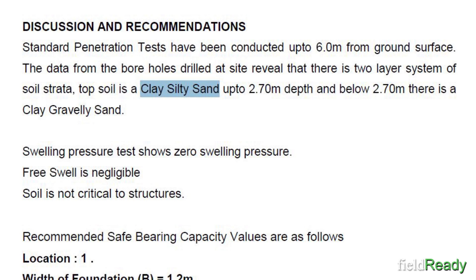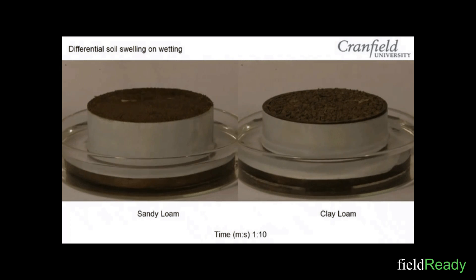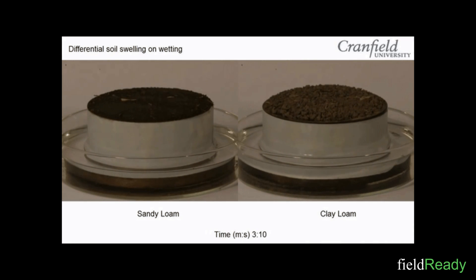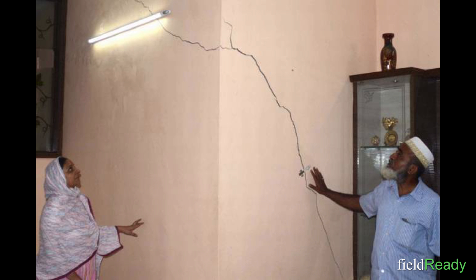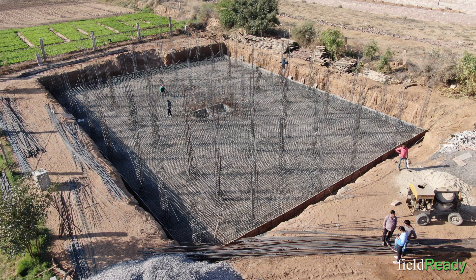Coming to the footing design — as per the soil report, the entire site consisted of clayey soil. This type of soil is known for lifting up the footing in the presence of moisture, which will later result in cracking of walls. So to counteract this lifting pressure, the best type of footing for this kind of soft soil is raft footing.